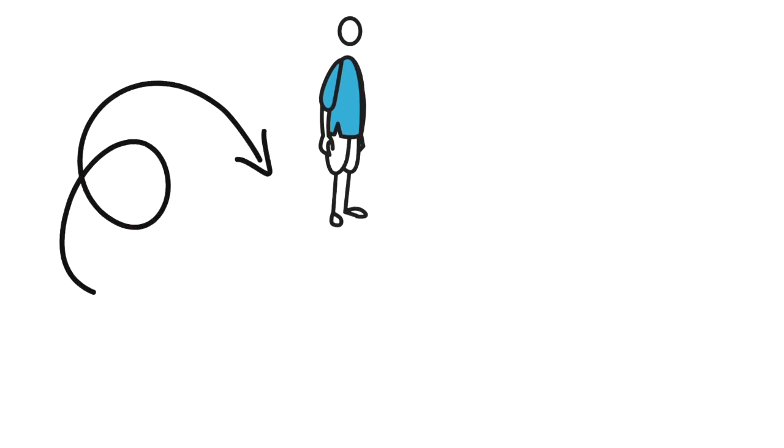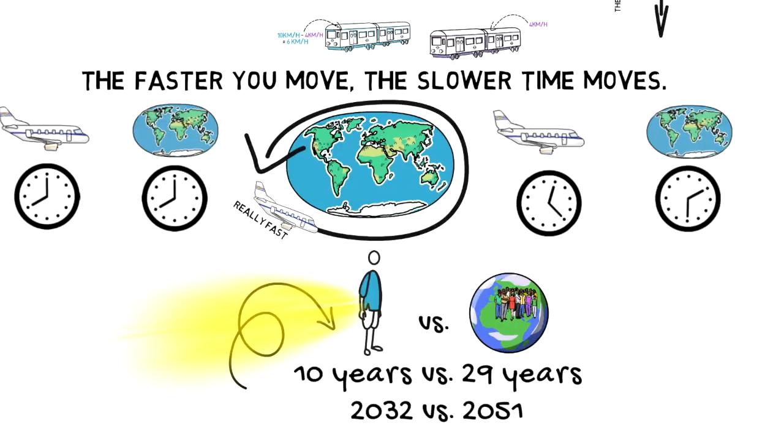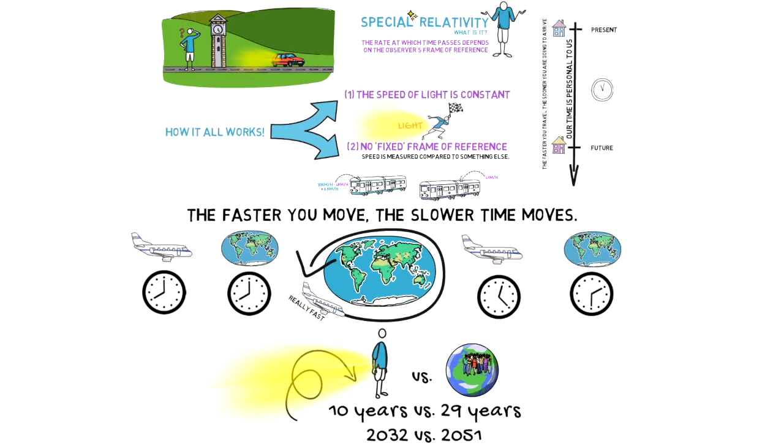Now imagine that you were flung into space at almost exactly the speed of light and traveled for 10 years before coming back. But for the people on Earth, 29 years would have passed. You would return in 2051 having aged only 10 years. Time travel is possible.